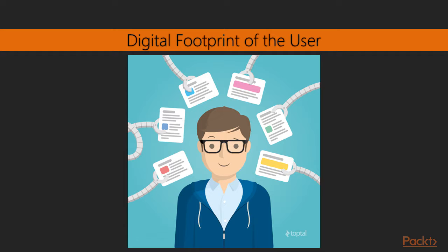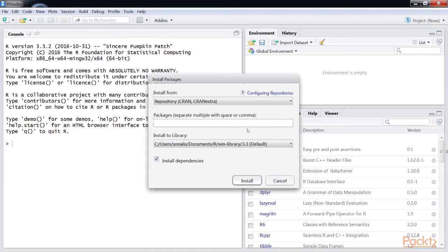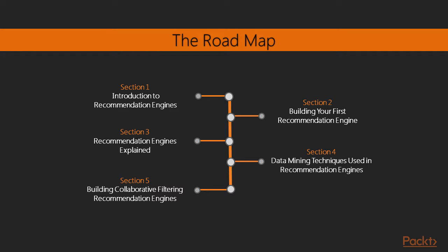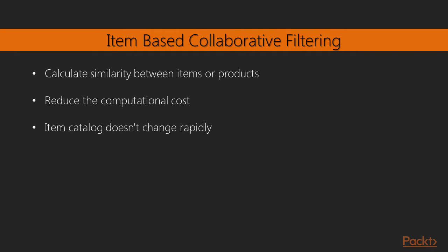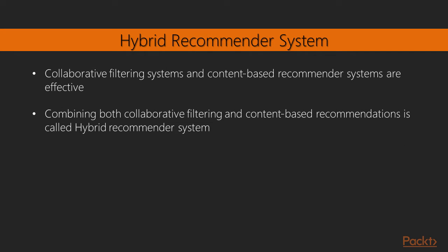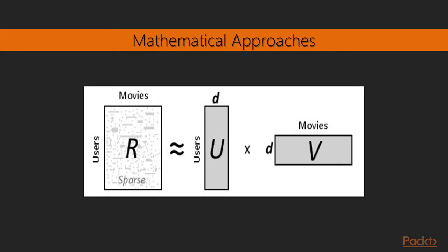Popular recommendation engine approaches available along with their pros and cons are covered. The next section covers a basic implementation of how to build and deploy your recommendation engine, to give a head start before we take off into the world of recommendation engines. We'll then see different recommendation engine techniques such as user-based collaborative filtering, item-based collaborative filtering, content-based recommendation engines, context-aware recommenders, hybrid recommenders, model-based recommender systems using machine learning models, and mathematical models.